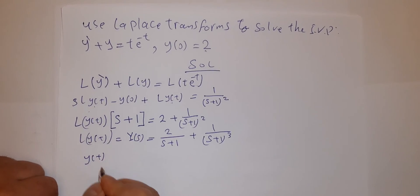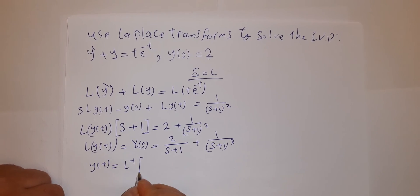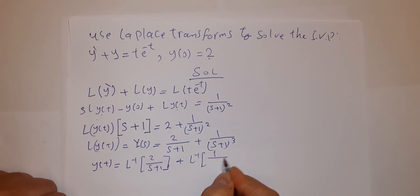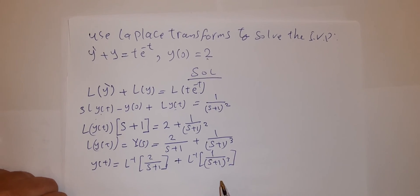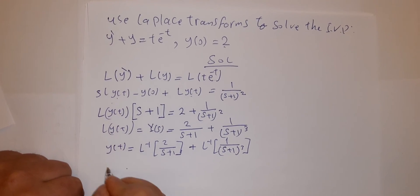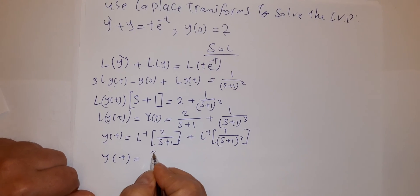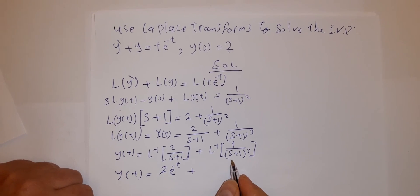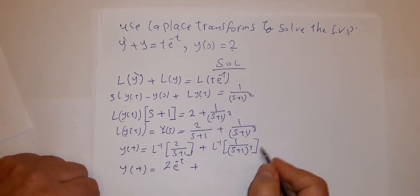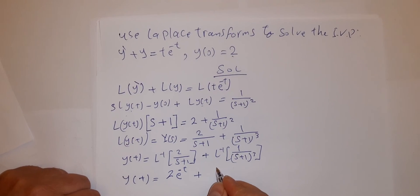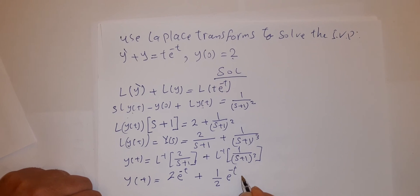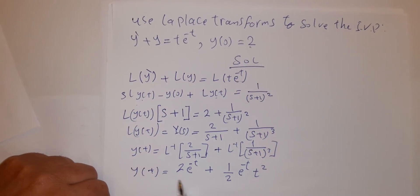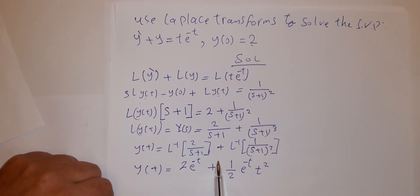Now apply inverse Laplace to both terms: y(t) = L⁻¹{2/(s+1)} + L⁻¹{1/(s+1)³}. From the Laplace inverse table, L⁻¹{2/(s+1)} = 2e^(−t), and using the standard rule L⁻¹{1/(s+1)³} = (1/2)e^(−t)·t². So the final answer is y(t) = 2e^(−t) + (1/2)e^(−t)t². Substituting t = 0 confirms y(0) = 2.